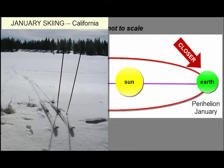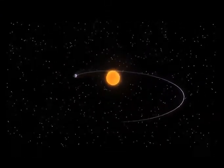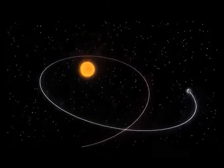All planets in our solar system travel around the sun in elliptical orbits. It's Kepler's first law.